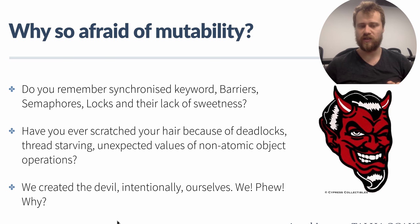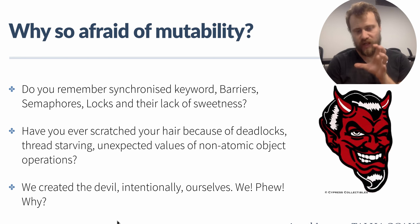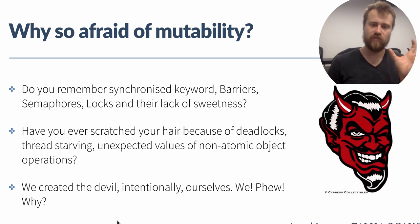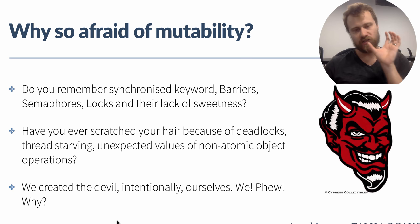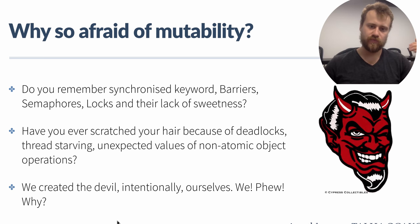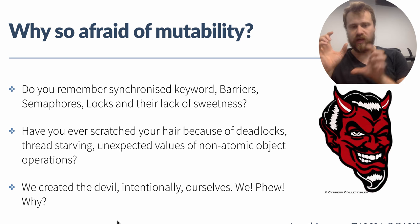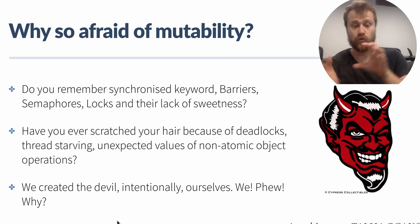This is the reason for all the bugs in a concurrent application. That's why we try to synchronize the common data — using synchronized keywords, barriers, semaphores, locks, and mutexes. But these are really hard to use correctly.